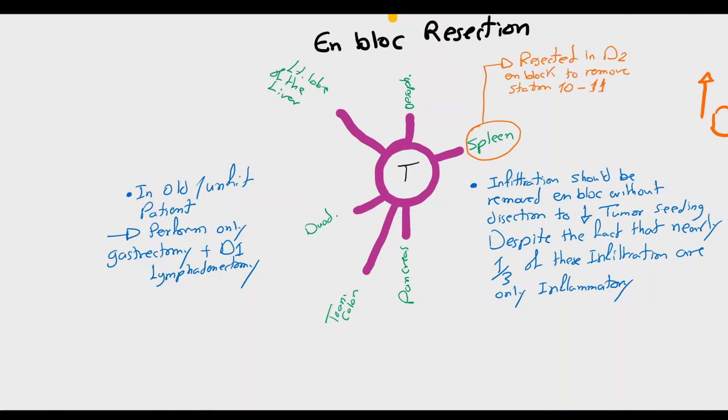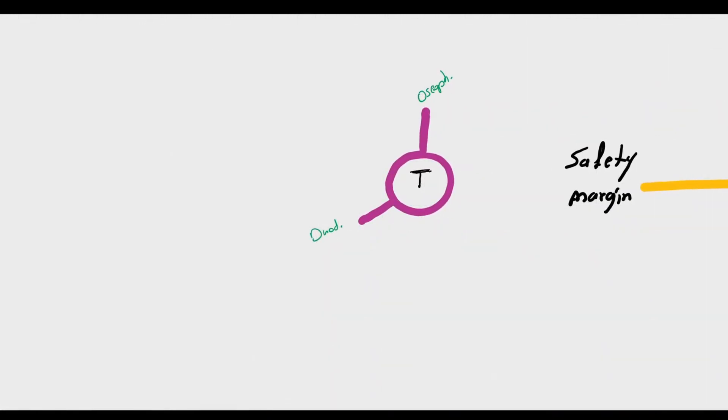The third concept is the safety margin. The rule in gastric tumor surgery is resection from the tumor downwards. This means proximal tumors always perform a total gastrectomy. Distal tumors, a distal gastrectomy might be considered under the following conditions: